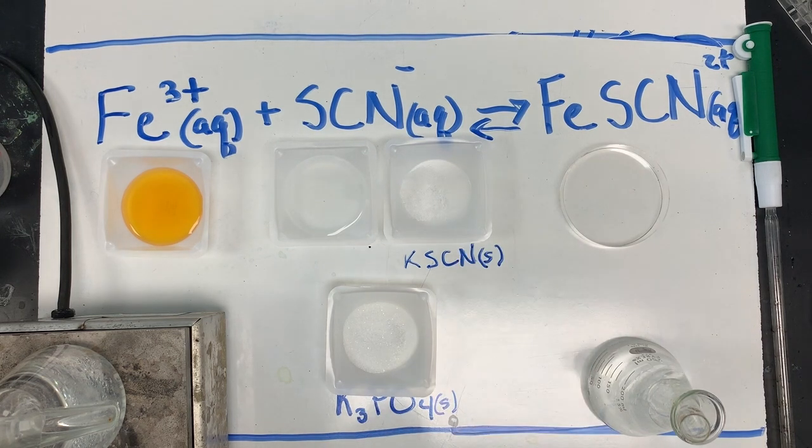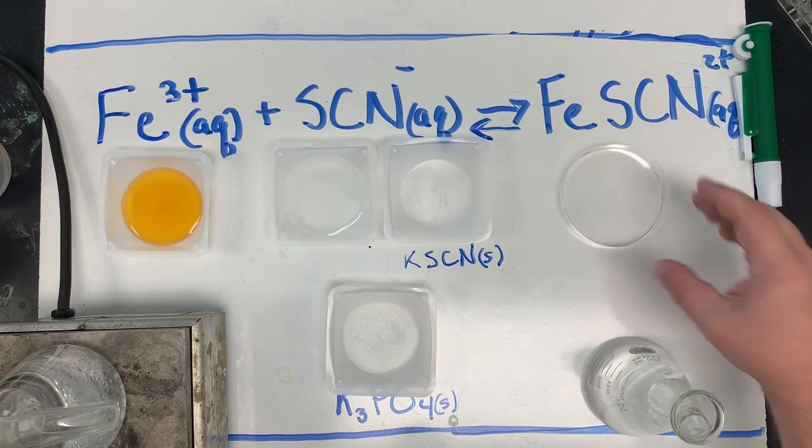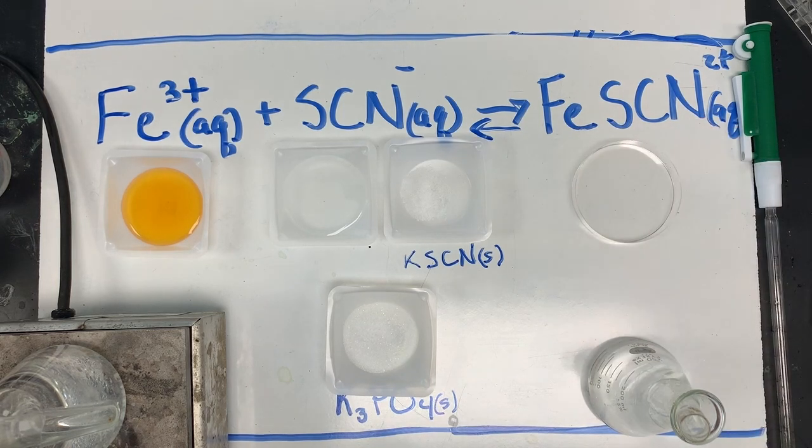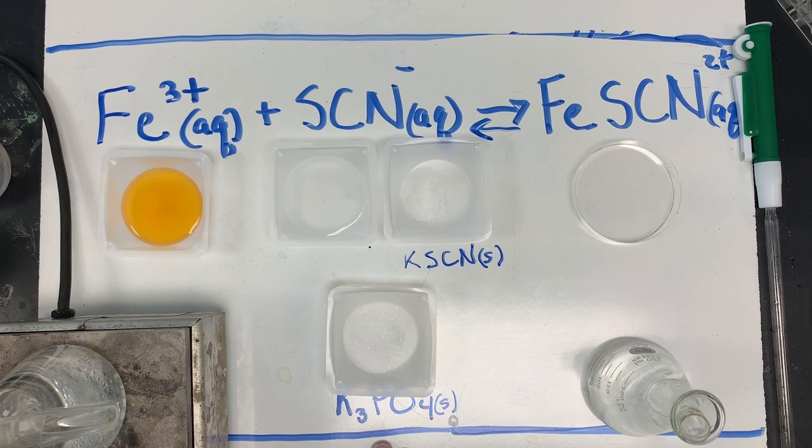And then next to it, I have some crystals of potassium thiocyanate that we're going to play with. Over here, I have a dish. We're going to mix these two together and create our product, create our equilibrium. And then down here, I have a third chemical called potassium phosphate, and we're going to use that to drive our equilibrium as well.